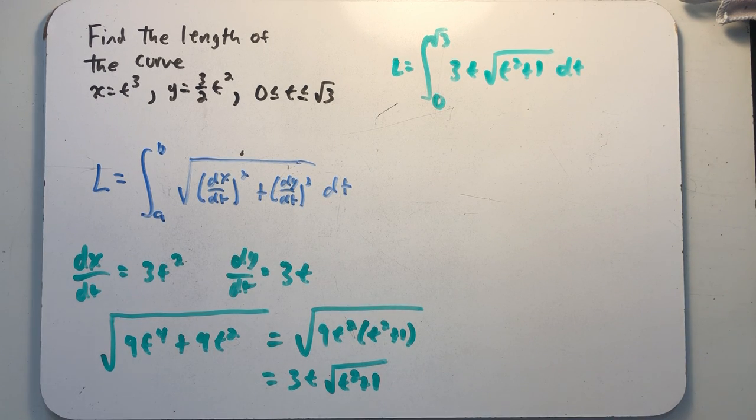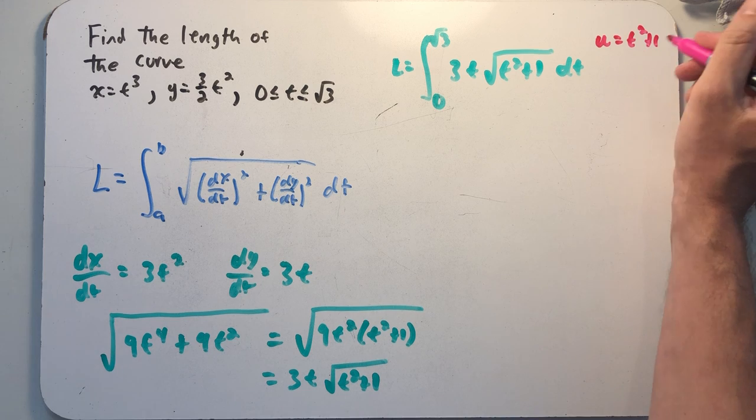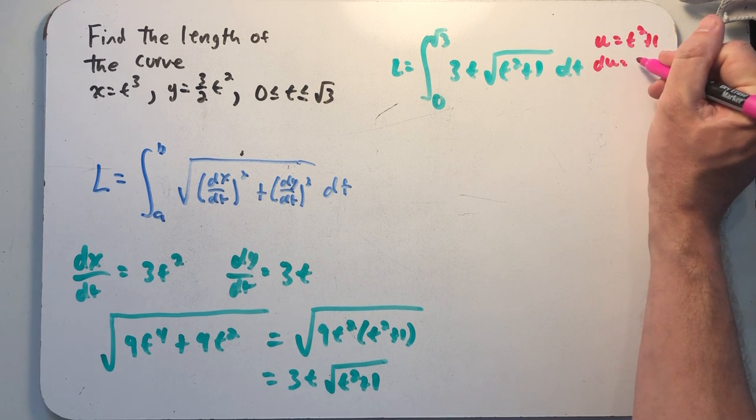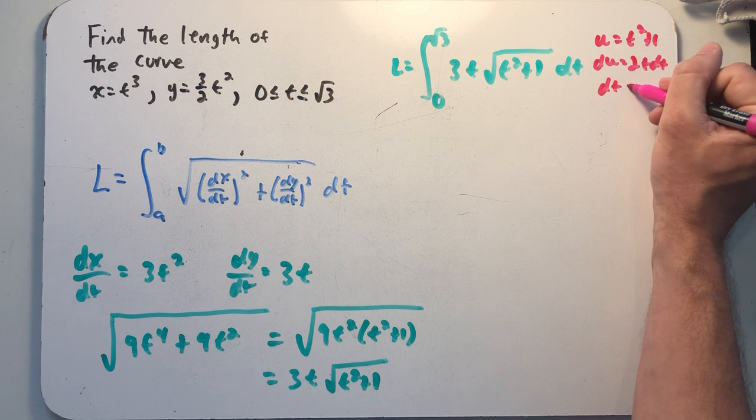And I look at this and I think I can proceed with a substitution. I think I can let u equal t squared plus 1. du is then 2t dt, letting me make my substitution.